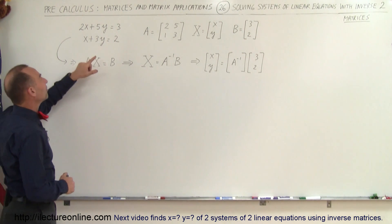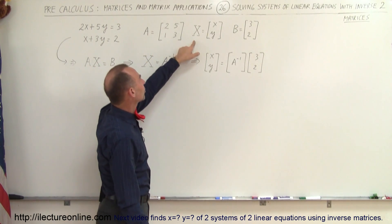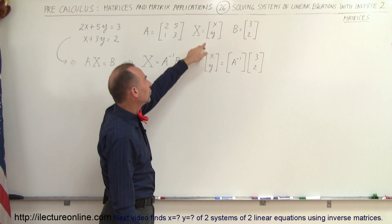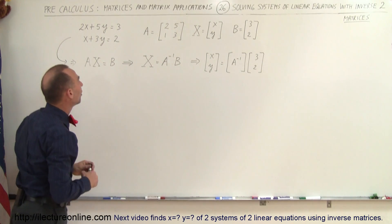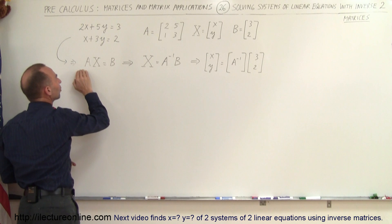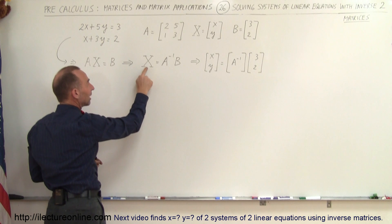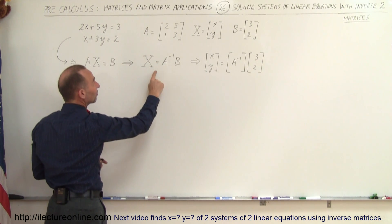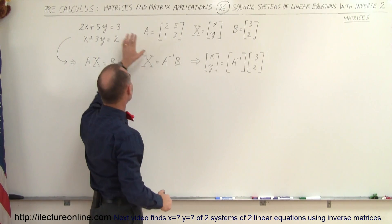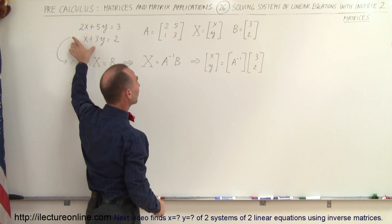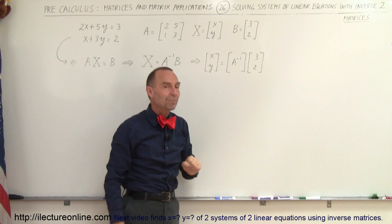The A matrix is the coefficients of the x and y variables, the X matrix is simply the matrix of the two unknown variables x and y, and the B matrix is simply the constants to the right of the equal signs. We can write this system of linear equations in matrix form as A times X equals B, which means the X matrix is simply the inverse of matrix A times B.